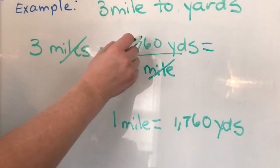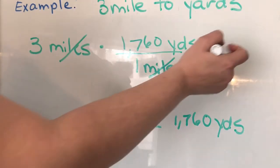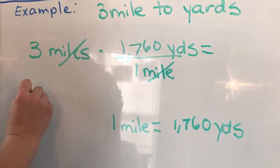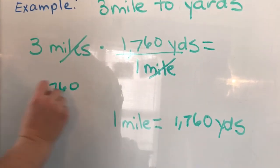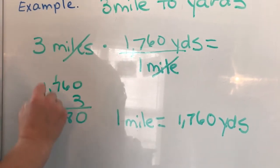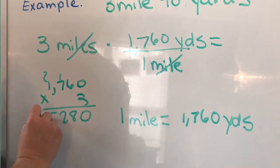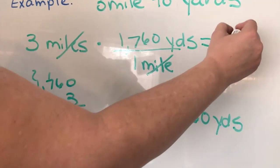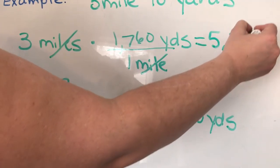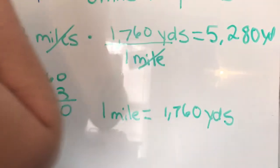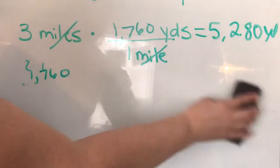And this is our standard. It's not going to change. We multiply across. Miles cancels with miles. 3 times 1,760. You can do the math. 5,280 yards. Okay, that's our second example.